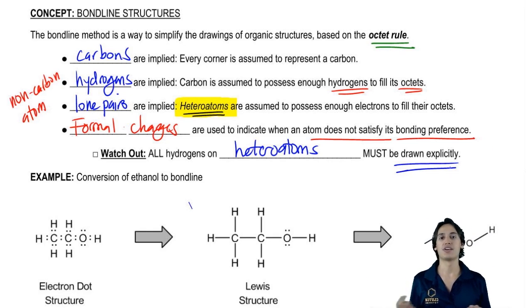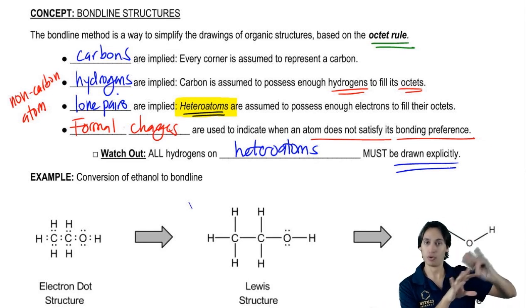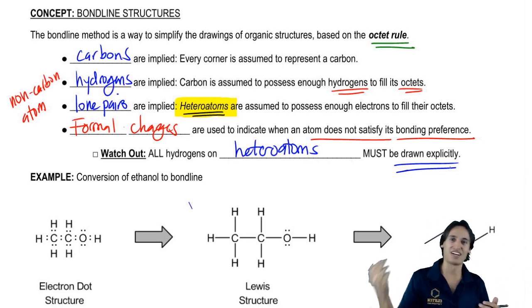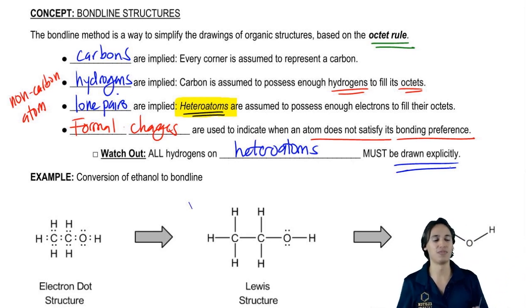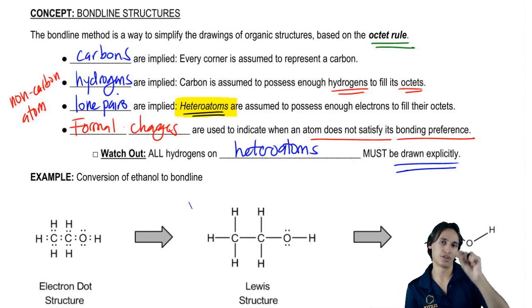The reason is because that could get tricky. If we don't draw the lone pairs and if we also don't draw the hydrogens on a heteroatom, then I wouldn't know does it have a hydrogen, does it have a lone pair, it would get confusing. So in order to avoid that, we actually are going to include all the hydrogens that are drawn directly on a heteroatom.